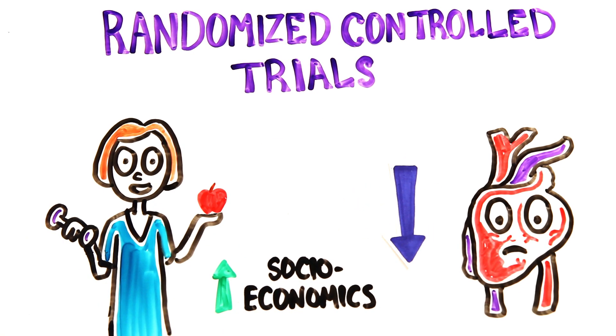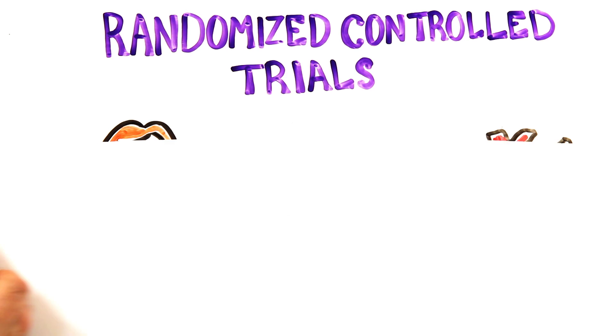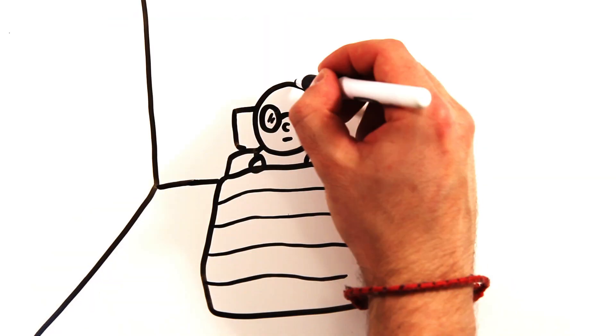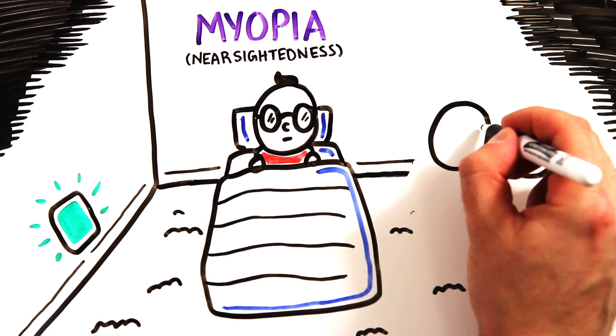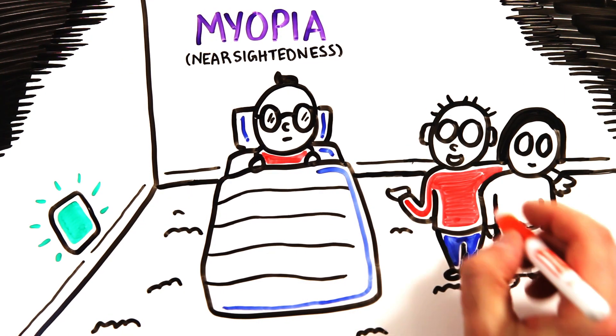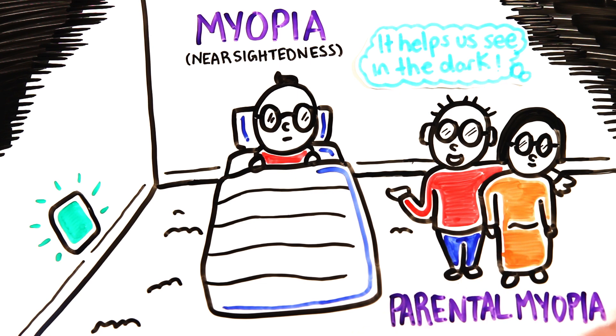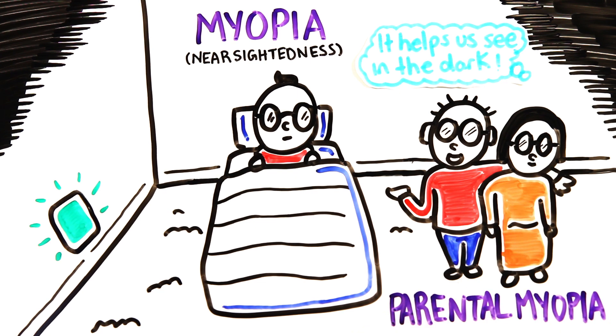Another case found that those who used nightlights as a kid were more likely to develop myopia. But there's actually a strong link between parental myopia and the development of child myopia. So in reality, myopic parents were simply more likely to leave a light on in their child's bedroom.